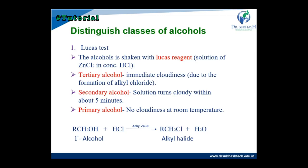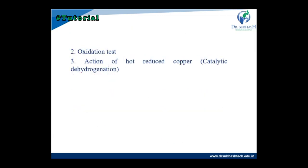In the Lucas test, primary alcohol shows no cloudiness at room temperature — no difference is observed — because complex formation and alkyl halide formation occur via the reaction: alcohol plus HCl in the presence of ZnCl2 gives alkyl halide and water is removed. The oxidation test and the catalytic dehydrogenation test using reduced copper can also be used to distinguish classes of alcohol.